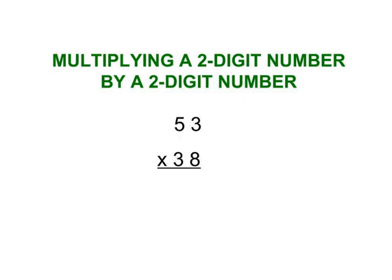The second step is to multiply the number 53 times the number in the tens place, or the 3. And since it's in the tens place, it's the number 30. I'm going to ignore the 8, and then that's going to give me two answers down here. I add those answers together to get my final answer.